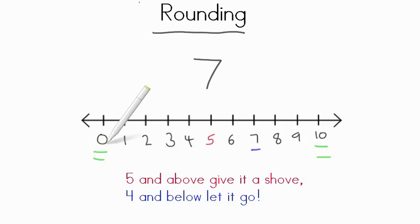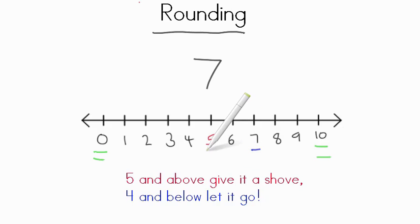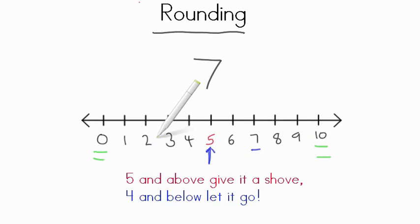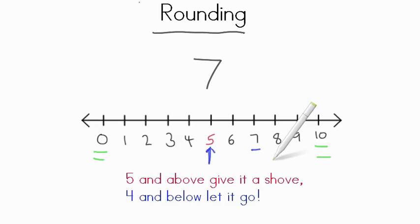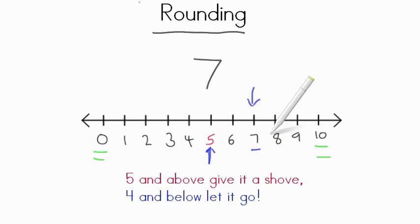Those are also called our benchmark numbers. And then in the center here, we have 5 — this is our midpoint. It's the exact middle between the two 10s, between the two benchmark numbers. We have 7 right here, so is it closer to the 10 or is it closer to 0?